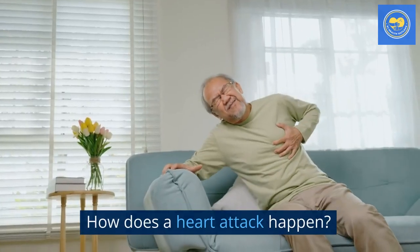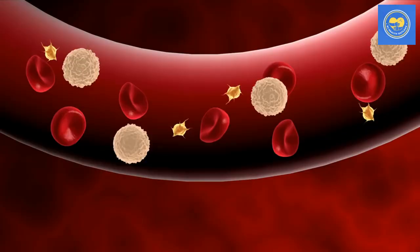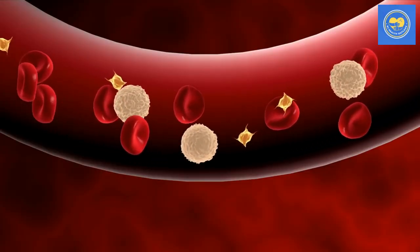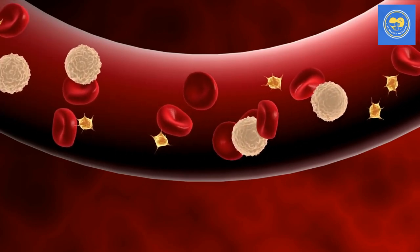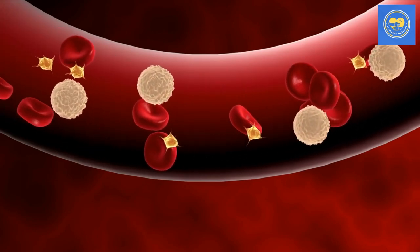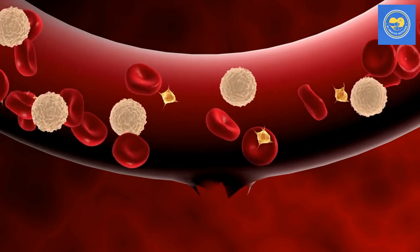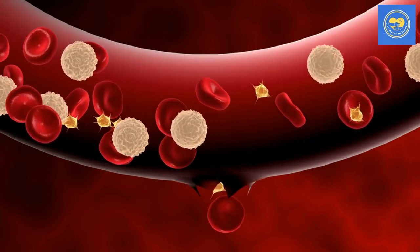How does a heart attack happen? A heart attack happens when an artery that brings blood to your heart — a coronary artery — gets completely blocked all of a sudden.